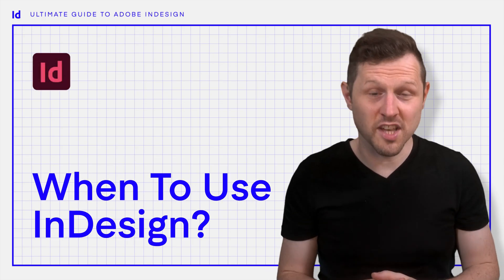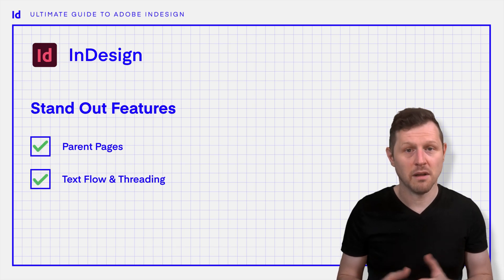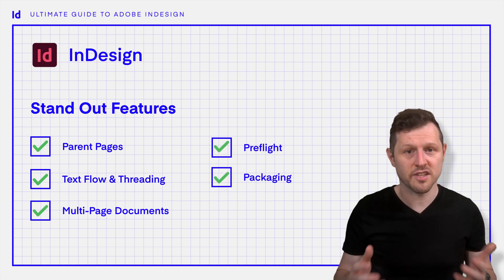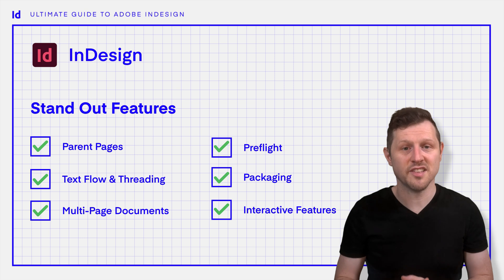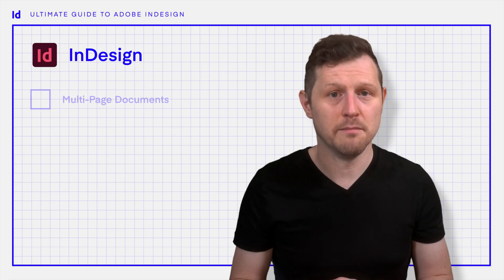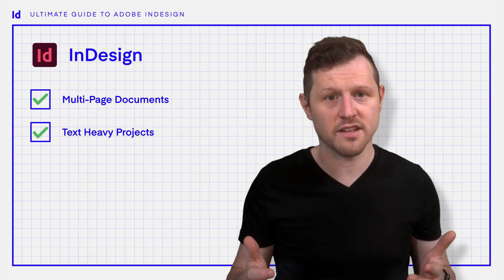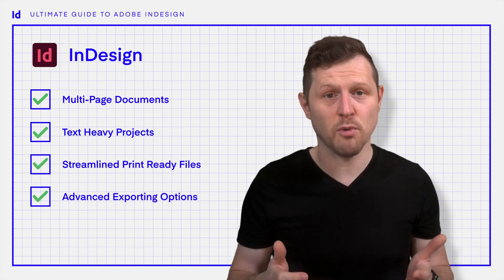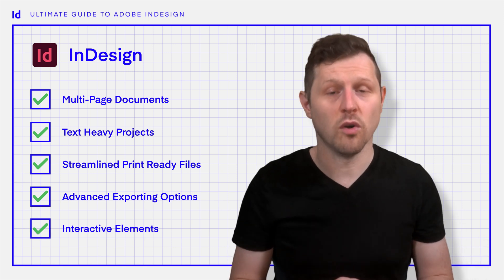So when should you use InDesign? Some of the key features that make InDesign really stand out include parent pages, text flow and threading, multi-page handling, pre-flight and packaging, and interactive features, to name a few. These are features that just don't exist in Photoshop or Illustrator and can save you a lot of time and improve your design process. While Photoshop and Illustrator are the gateway apps where designers typically start, if you want to create multi-page documents, develop text-heavy projects, prepare streamlined print-ready files, use advanced exporting options, and add interactive elements, you're really going to want to use InDesign.